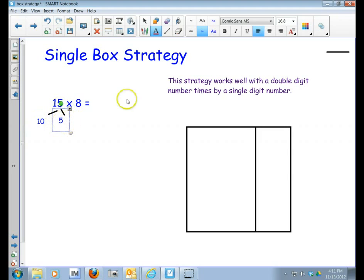So the two numbers that you broke apart, one's going to go on top of each section. So I put the 10 there, I put the 5 there, and then the number that stays the same is going to go over here. So over here I have the 8.